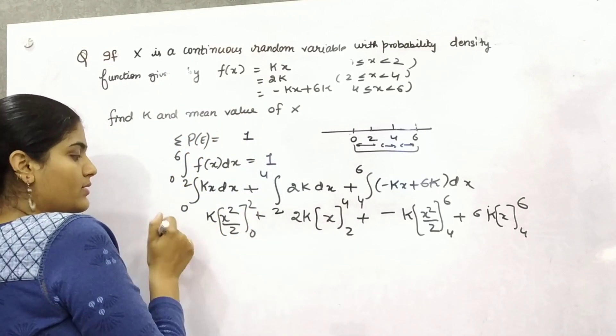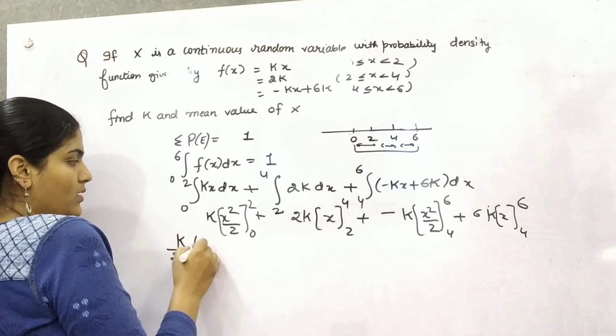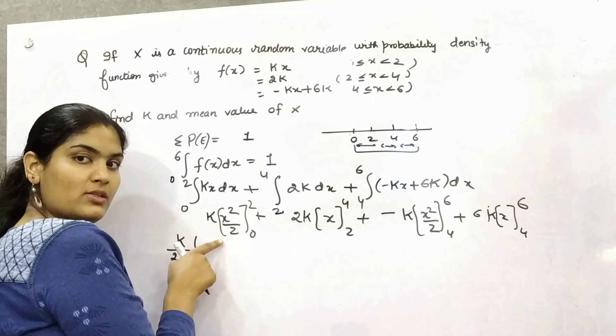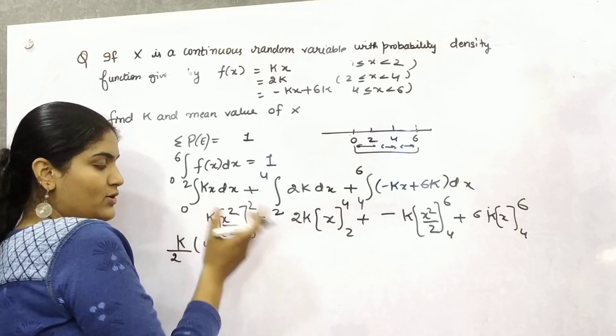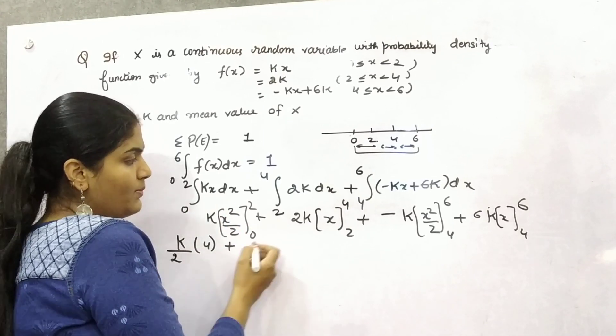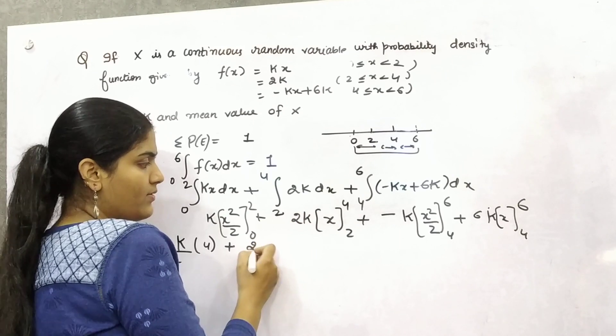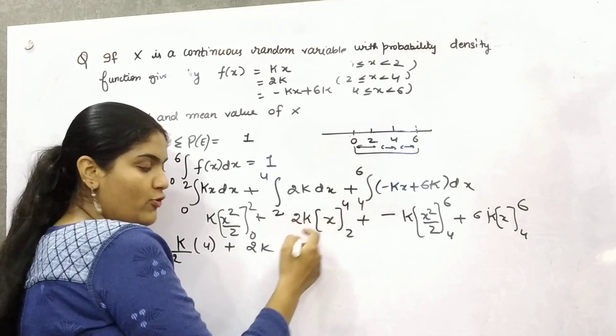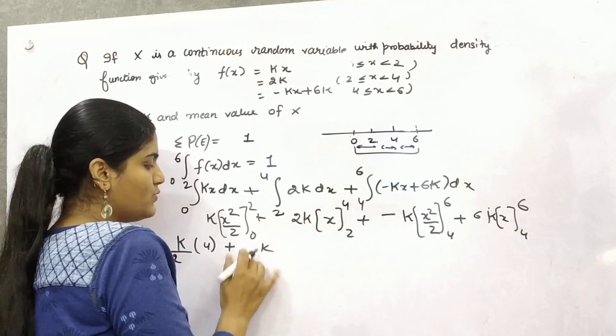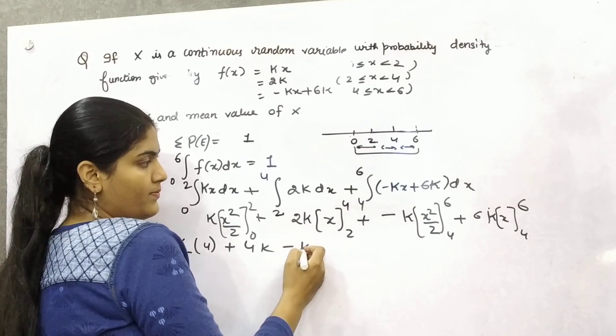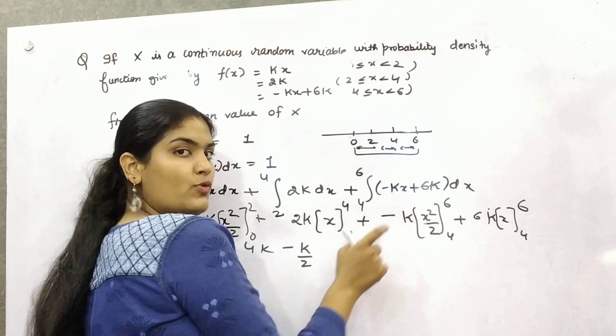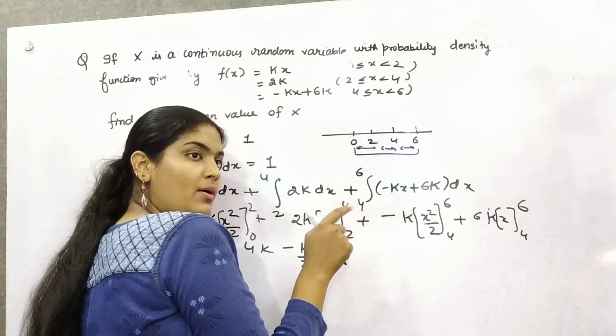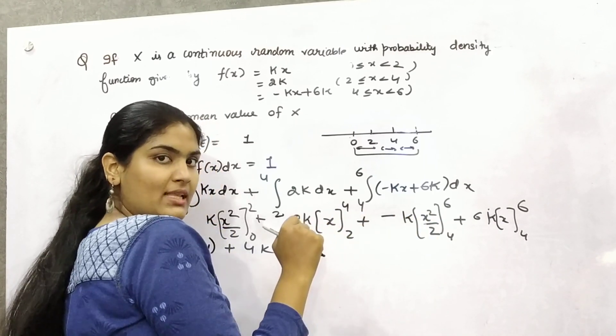Now expand this. You can take k by 2 out. Upper limit minus lower, 2 square is 4 and 0 square is 0. Plus 2k, upper limit minus lower, 4 minus 2 is 2, so 2 times 2 is 4. You can take 2 out. So 6 square minus 4 square, 36 minus 16, what is left? 20.